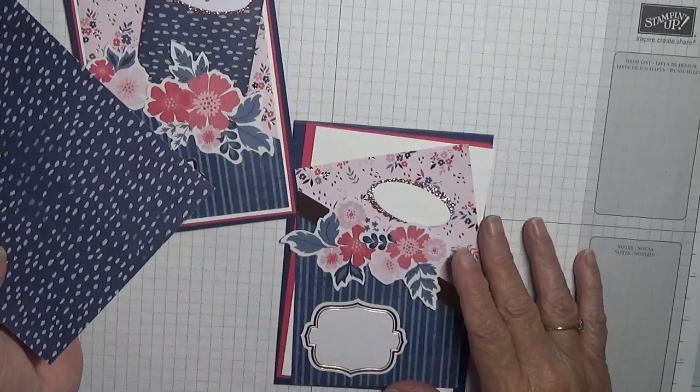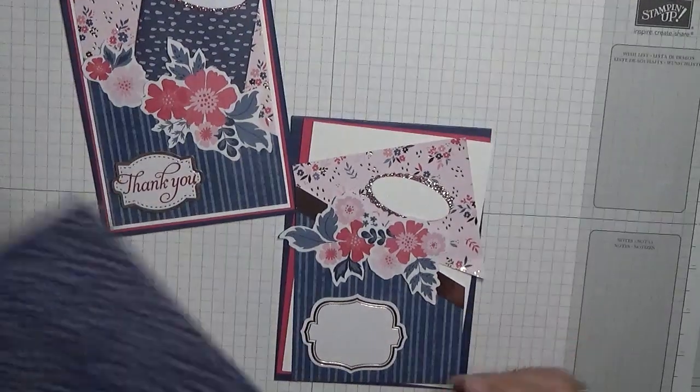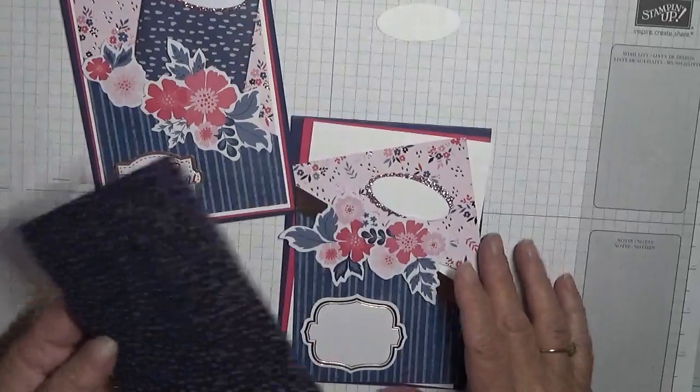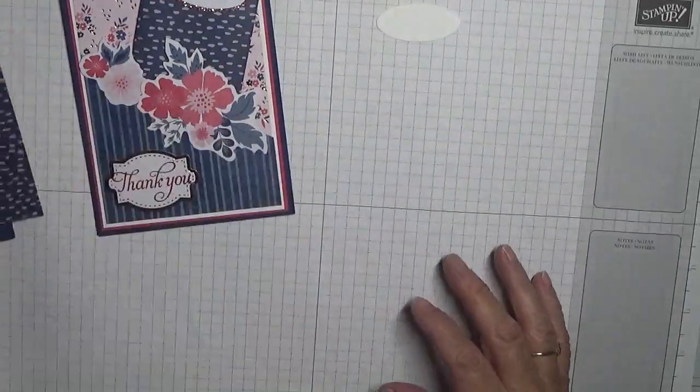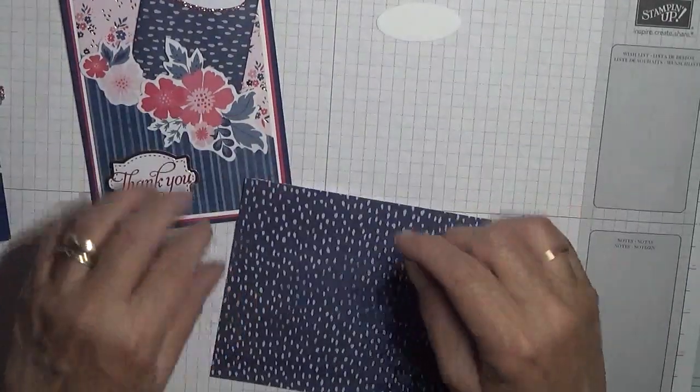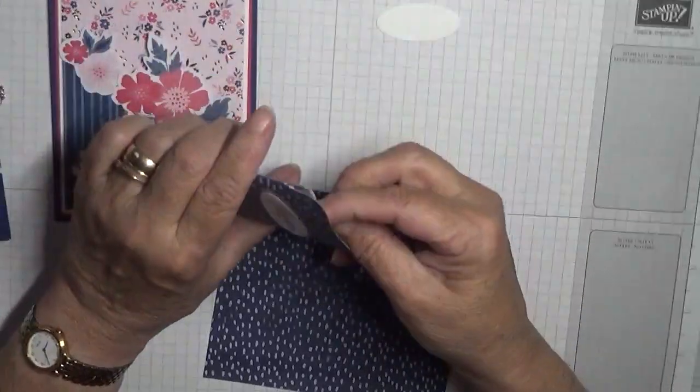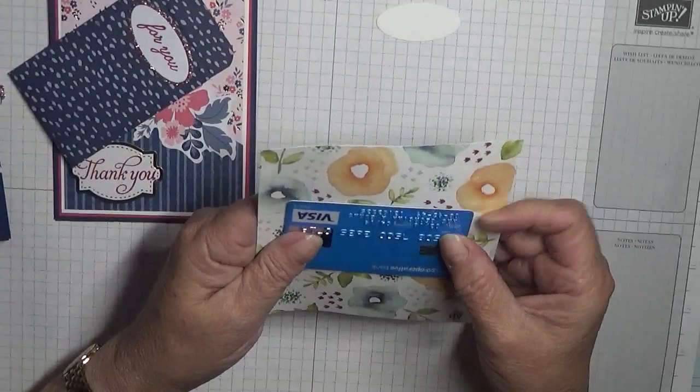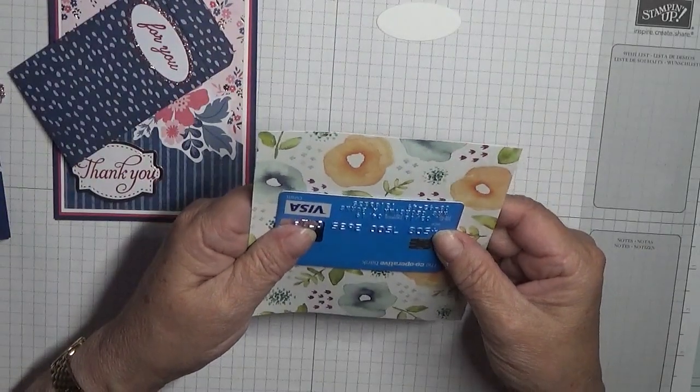And just an oval, that's the first oval in the layering ovals, and that's the first scalloped layering oval. So that's all the bits I need. I have got an extra one in case I mess up my stamping.